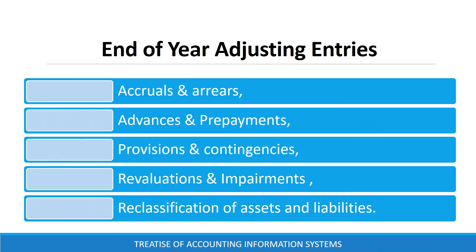The end of year adjusting entries are made before the financial statements are prepared. The adjusting entries involve recognizing and reporting of accruals and arrears, advances and prepayments, provisions and contingencies, revaluations and impairment, and reclassification of assets and liabilities.